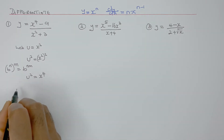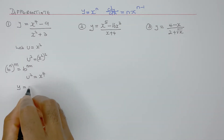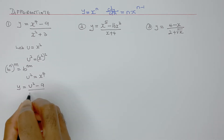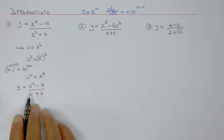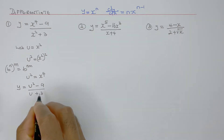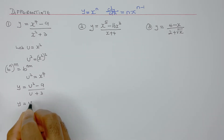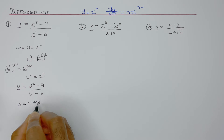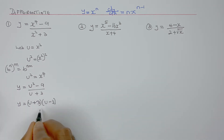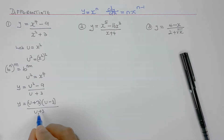So now I have y equals u squared minus 9 over u plus 3. If I simplify this, that means if I factorize, I can see the difference of two squares: (u plus 3)(u minus 3), all over u plus 3. So u plus 3 cancels with u plus 3.